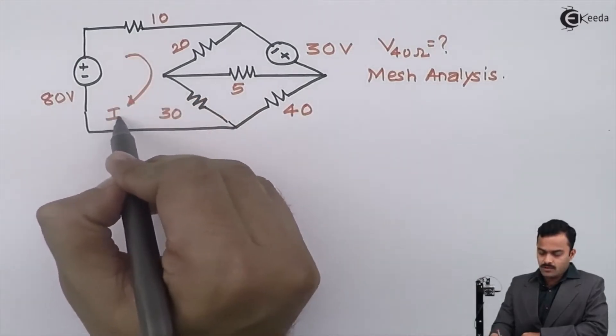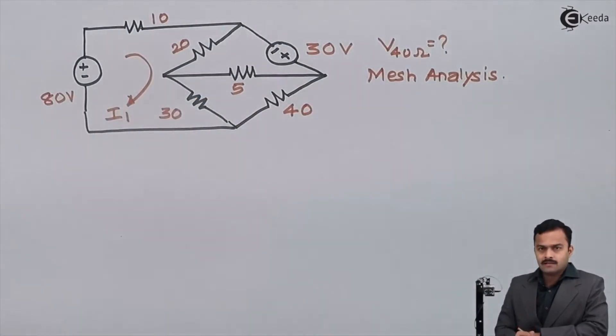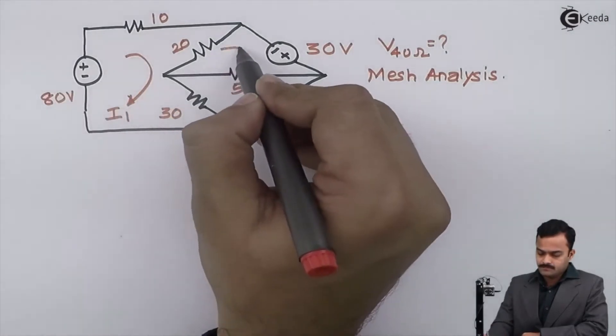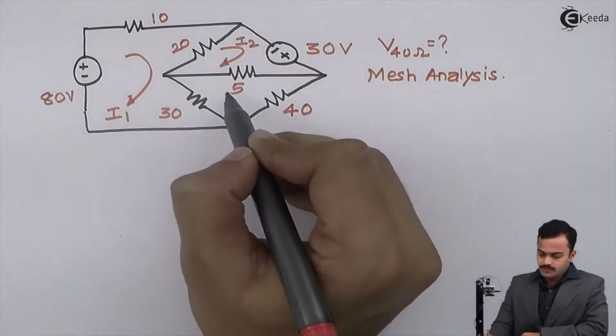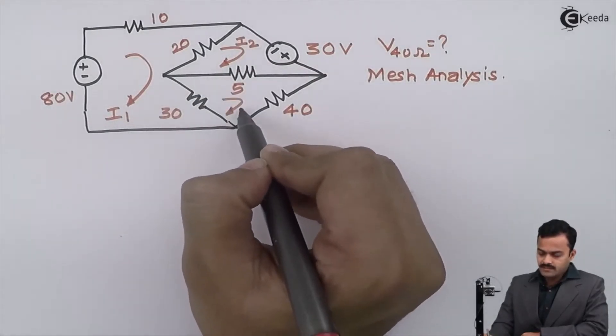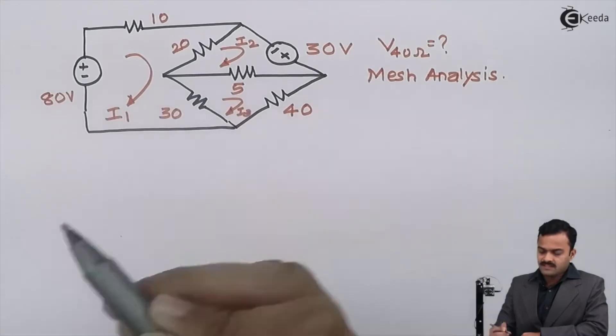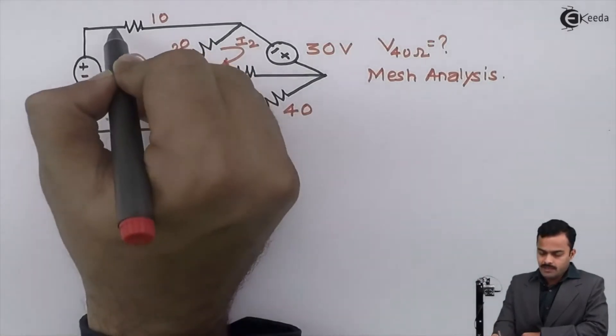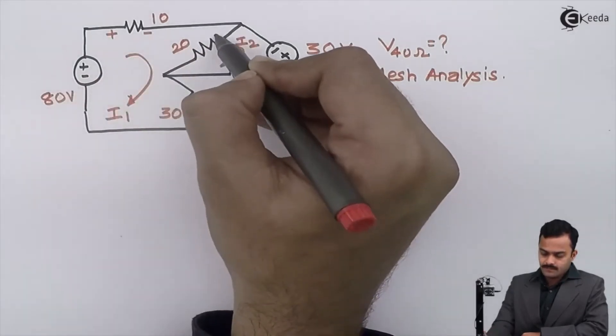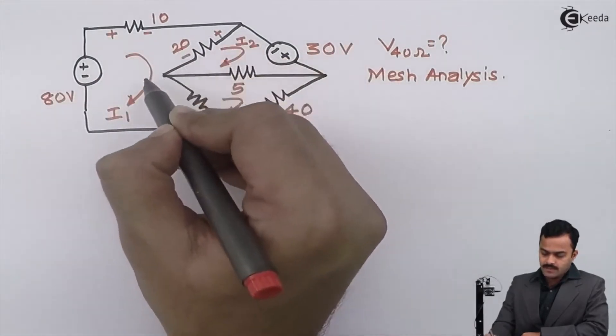I'm having first mesh or first loop, I will mark mesh current I1. Second mesh, mesh current I2, and third mesh, mesh current I3. Based on the direction of current, I will mark voltage drop.